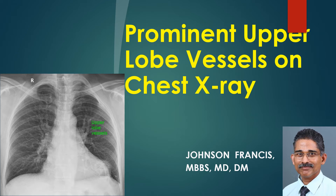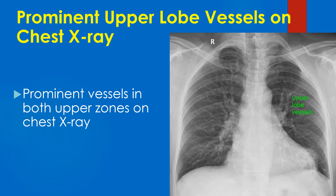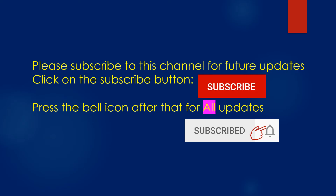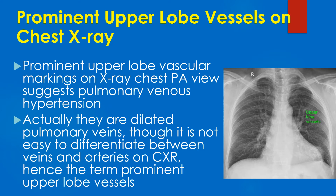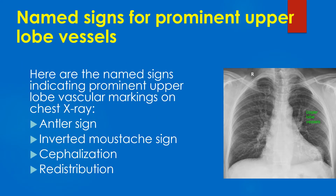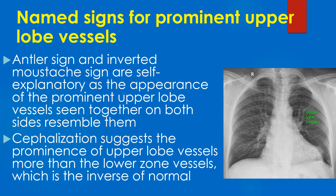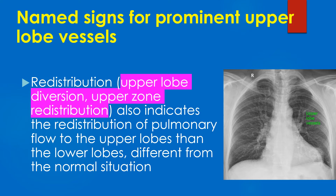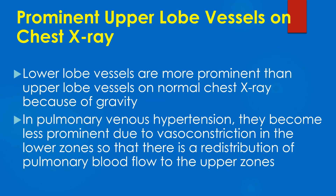Here is a short discussion on prominent upper lobe vessels on chest x-ray. Redistribution, also known as upper lobe diversion, indicates redistribution of pulmonary blood flow to the upper lobes rather than the lower lobes, which is different from the normal situation. Lower lobe vessels are more prominent than upper lobe vessels on a normal chest x-ray because of gravity.